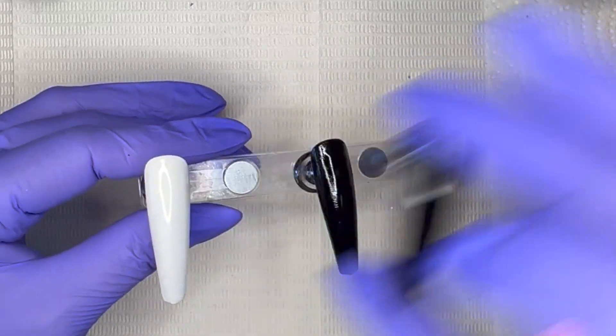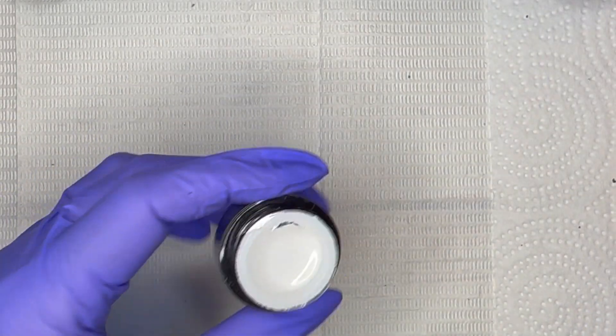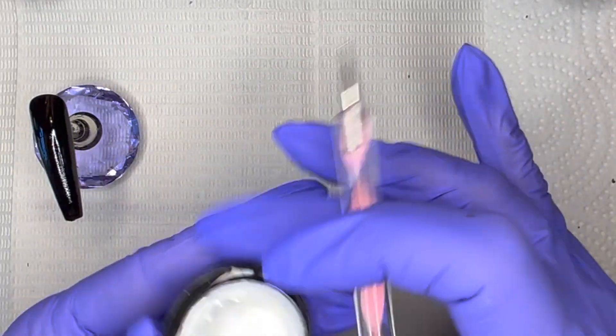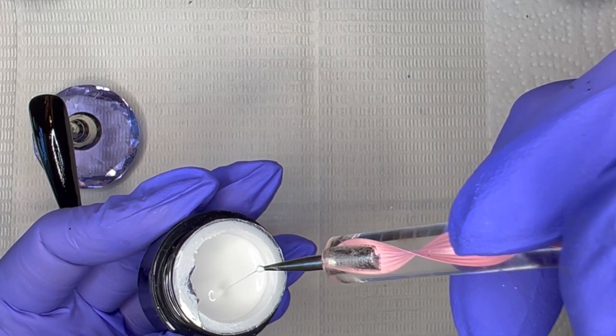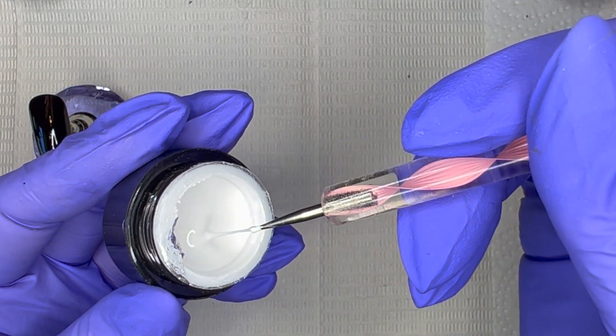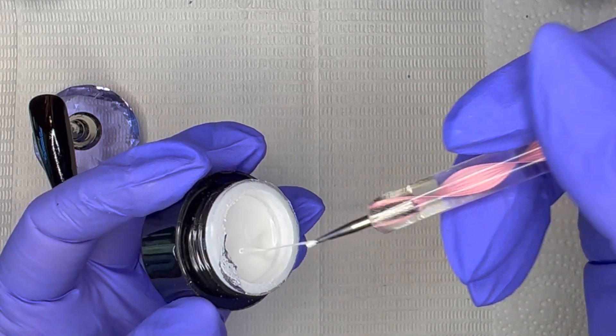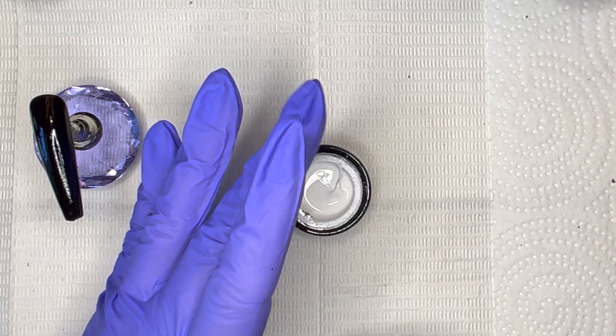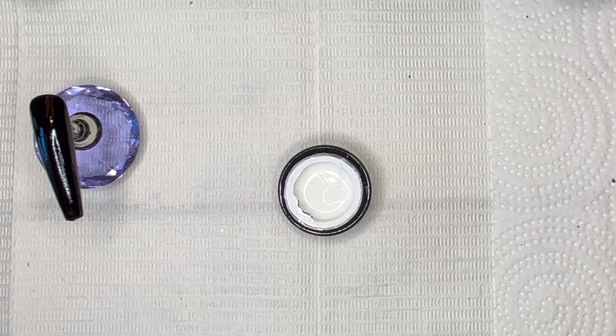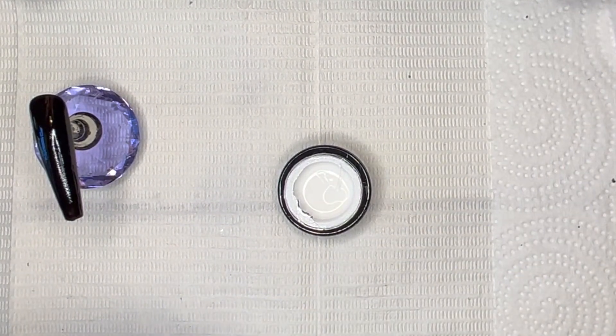I'm going to take one of the black nails and use the white spider gel just to show you the consistency and how you would go about using it for a basic application. I'm just using a dotting tool and as you can see it's quite stringy, it pulls, it stays attached. You have to really work to get it off of the implement. Depending upon the size of the tool that you use, you will get a different amount.